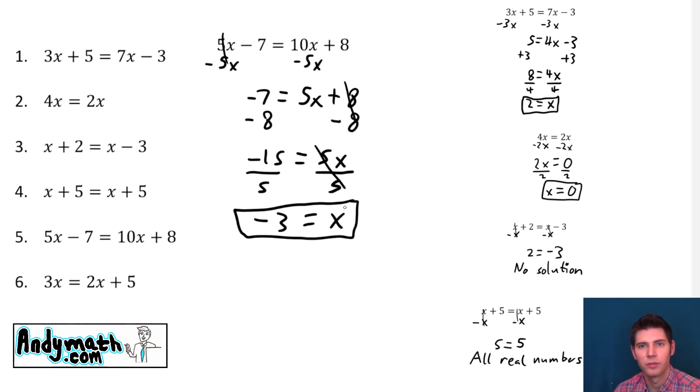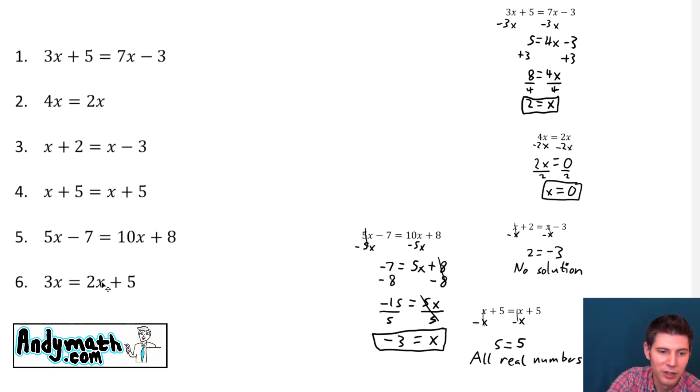And the last one. 3x equals 2x plus 5. Same thing: we want to get all the x's to one side. So we'll say minus 2x minus 2x. These cancel. 3x minus 2x is 1x. I'll just put x equals 5. Oh well, we're done. That was easy. There's the answer right there.